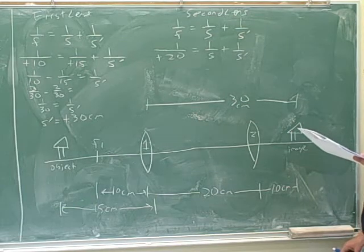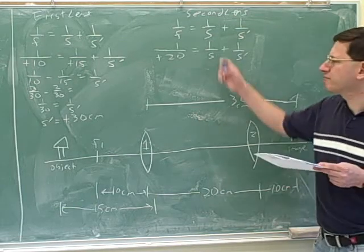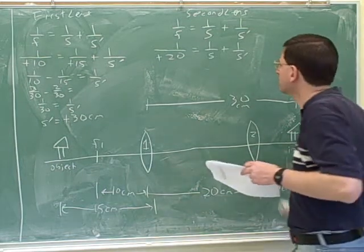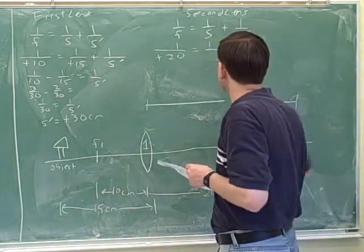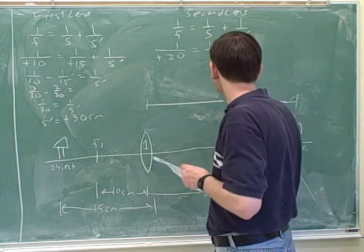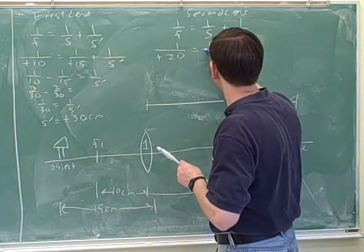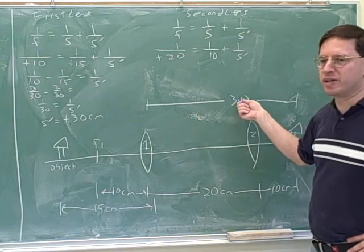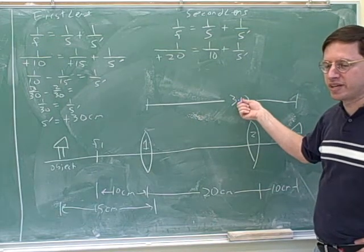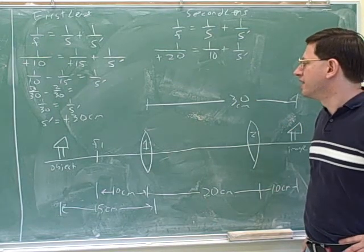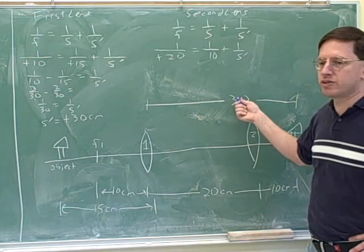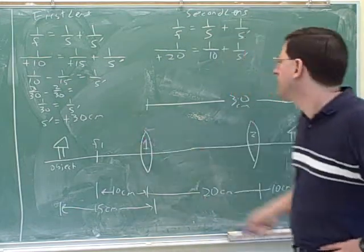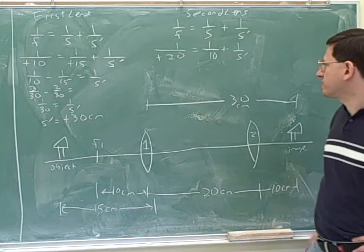Now, how about the object distance? That would be 10 centimeters, not 30. That would have been a tempting mistake for people to make. Because after all, the image from the first lens was 30 centimeters away, but it was 30 centimeters away from the first lens. So let's go through what each of these variables represents.